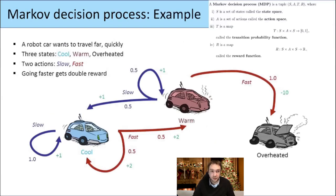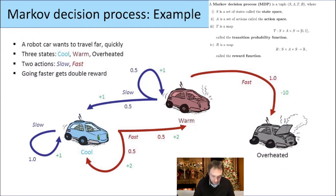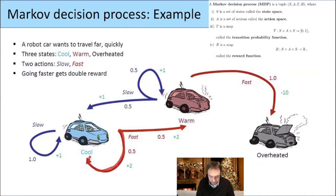We had this example with a robot car which wants to travel far and quickly. There were three different states: the set S consisted of 'cool', 'warm', and 'overheated'. There were two different actions: slow down or speed up. We see in this picture these transition probabilities. For example, going from the state 'cool' to 'warm' using the action 'go faster' has a 50% probability, and staying in the same state is also 50%. Going faster gives a reward of 2, and going slow gives a reward of 1.